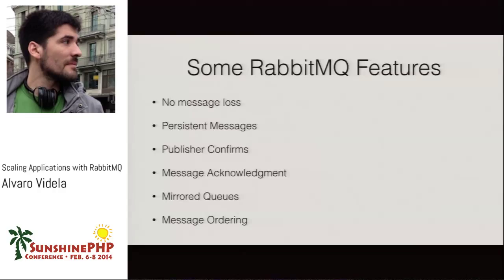I've seen a lot of tweets and complaints saying Rabbit doesn't have message ordering — Rabbit does have message ordering. The only moment you won't get messages in order is if a consumer crashes before acknowledging a message, and that message gets put back in the queue. But if a previous message was already processed by another consumer in that time period, there's no magic that can fix that — that's just physics.